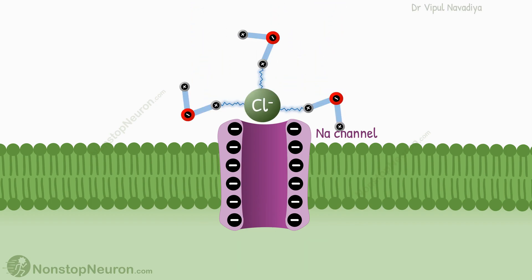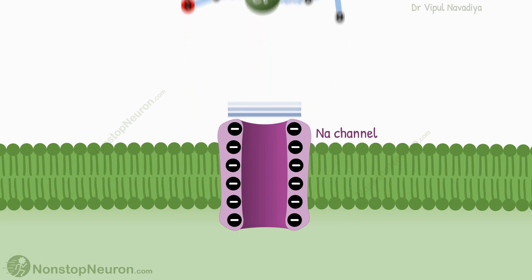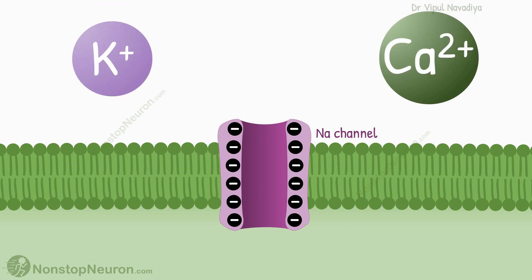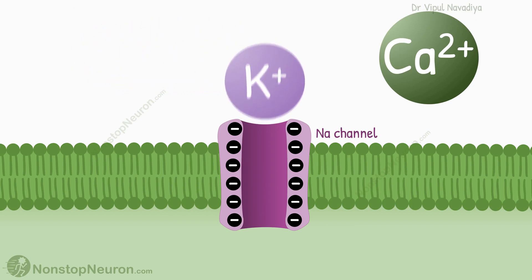If a negatively charged ion — for example, chloride — comes close to it, it is simply repelled by the negative charge of the channel. So negatively charged ions cannot cross the sodium channel. But what about other positively charged ions like potassium and calcium? They are simply too large to fit into the channel, so they also cannot pass through. This is why sodium channels are highly selective for the passage of sodium ions.